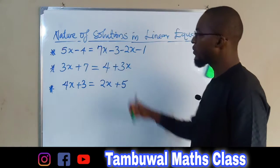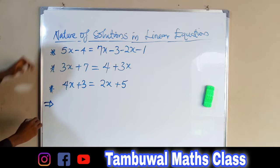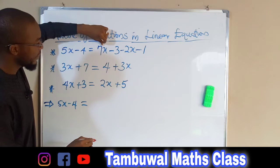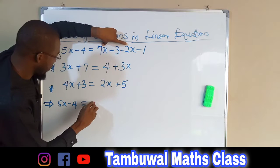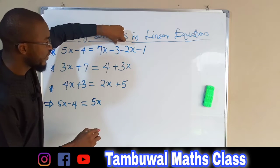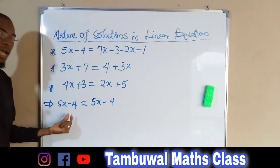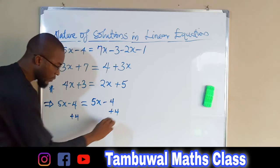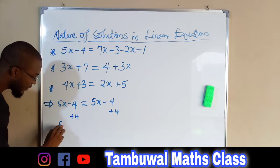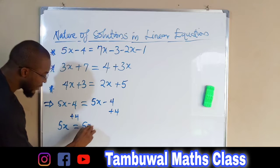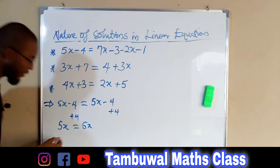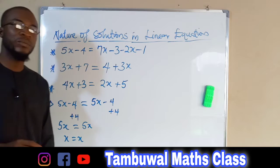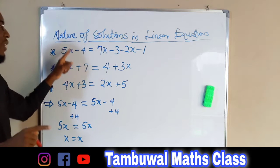Let us look at the first equation. We have 5x minus 4 on the left, and on the right hand side we have 7x minus 2x, which is the same thing as 5x. Then minus 3 minus 1 is minus 4. If we add positive 4 to both sides, we get 5x equals 5x. Dividing both sides by 5 gives us x equals x.